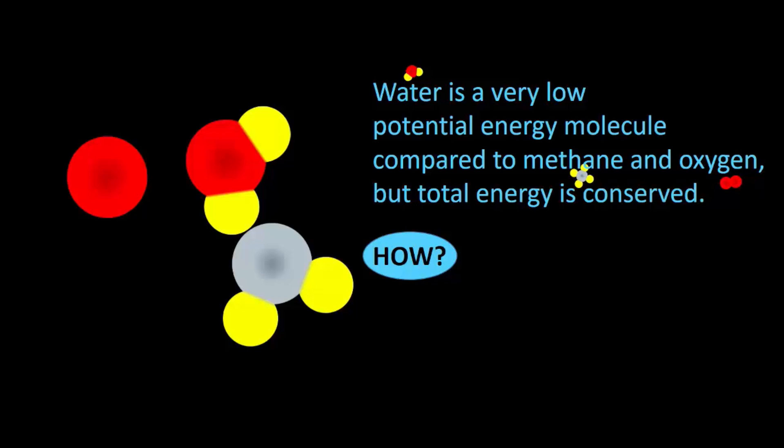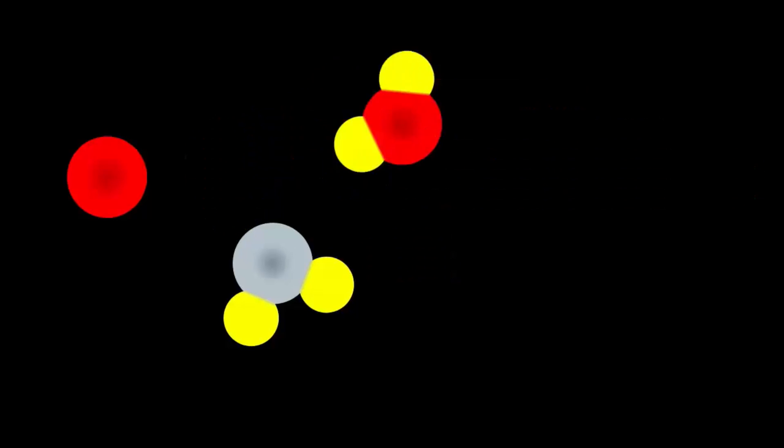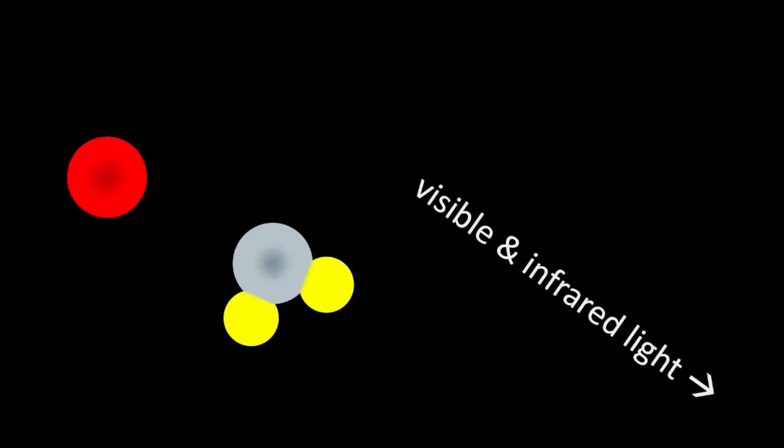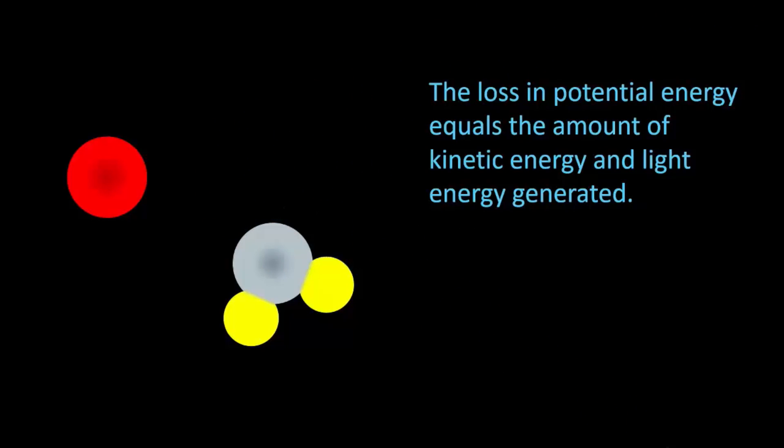Two things occur that make that possible. One, when water forms, it gains a lot of kinetic energy, which we see here as high speed and rotation. And two, when water forms, water's electrons go to a lower energy state, which emits visible and infrared light. So the loss in potential energy equals the amount of kinetic energy and light energy generated.